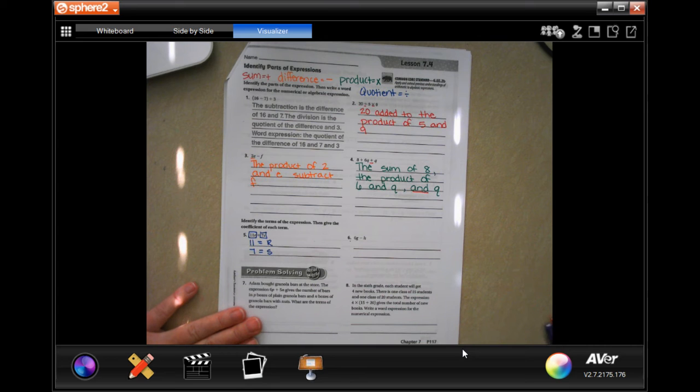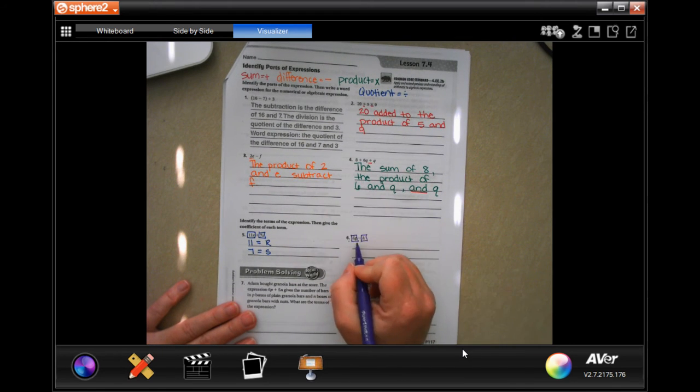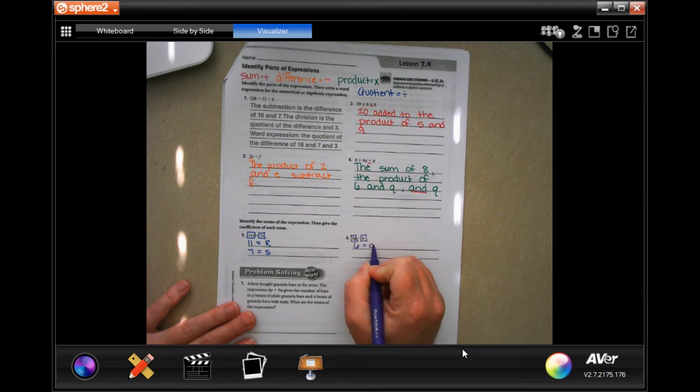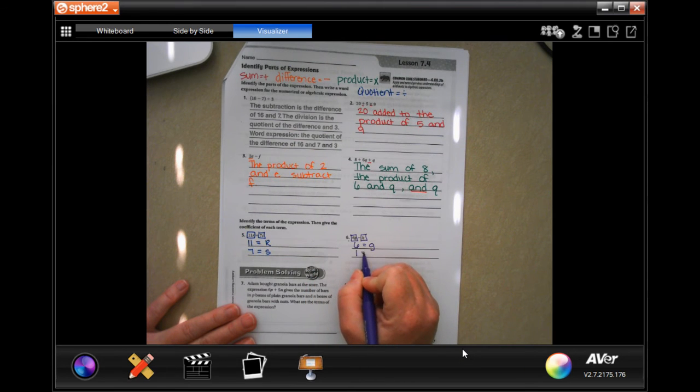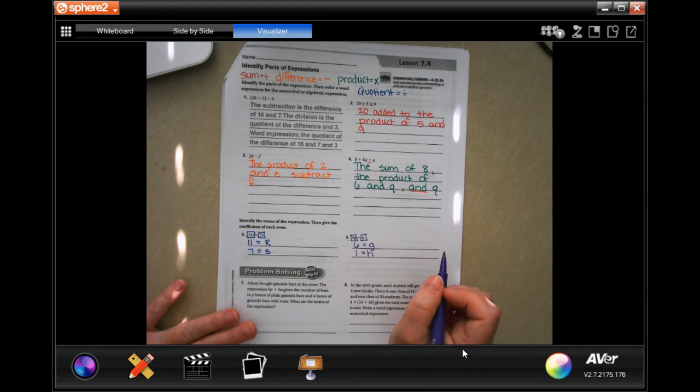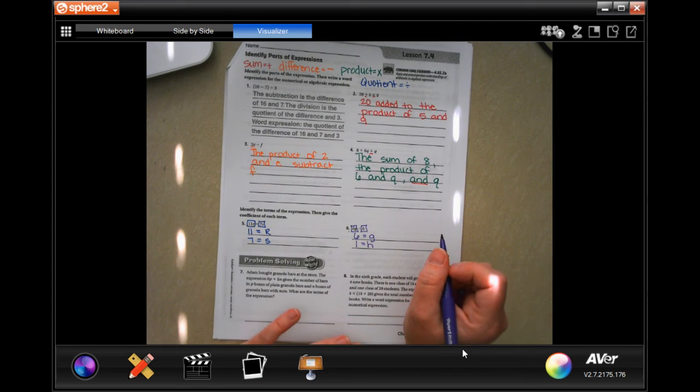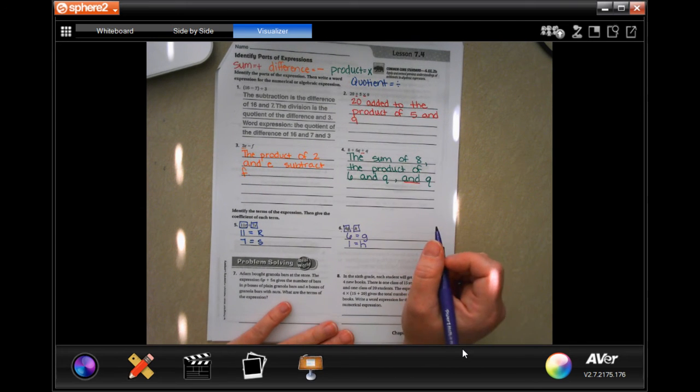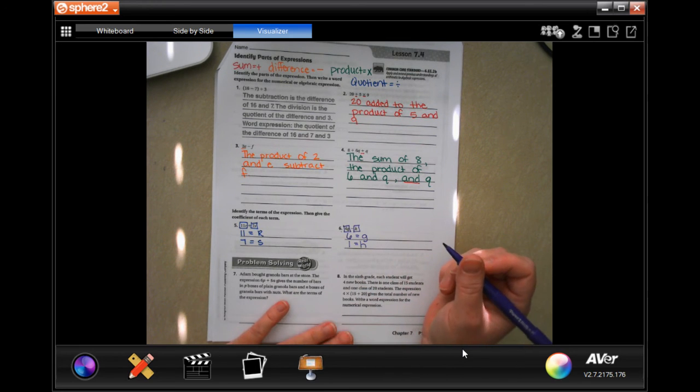So one last one here. There's one term, there's another term. So six is going to be the coefficient of g. And when there's no number before a letter, it means that the coefficient is one every single time. If you think about it, we don't usually say one apple, we'll say an apple or a apple, but we don't usually say one.